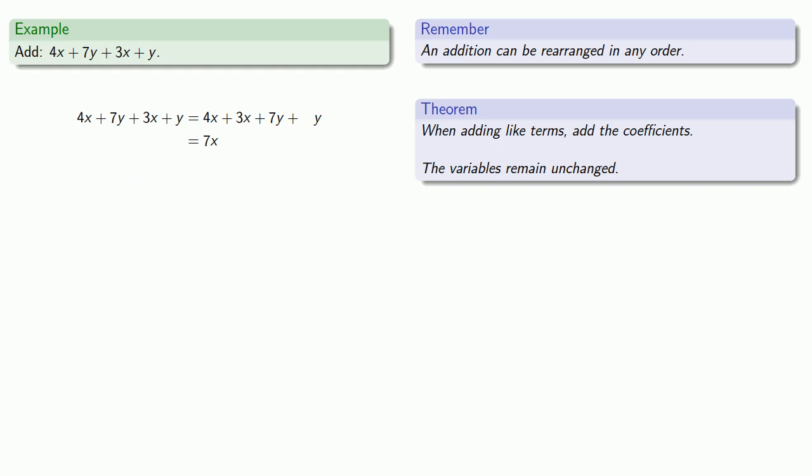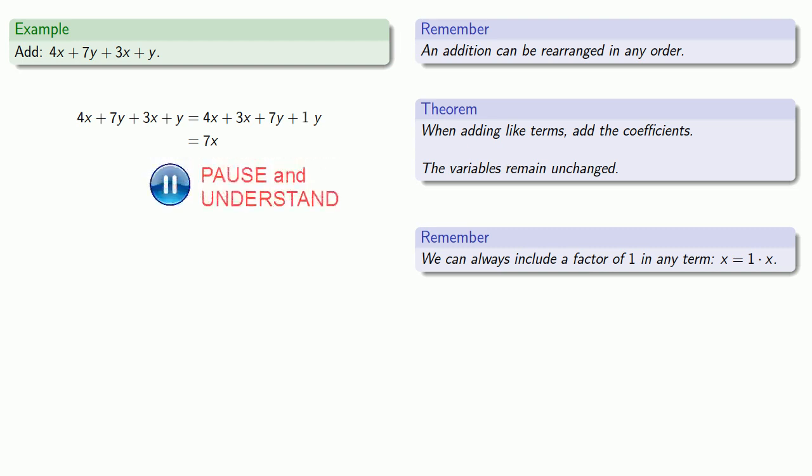7y and y are like terms, but there's a problem. y doesn't appear to have a coefficient. Well, actually it does. Remember, we can always include a factor of 1 in any term. So x is equal to 1 times x, and y is equal to 1 times y. Now my y terms have coefficients 7 and 1, and I'll add them together to get my coefficient of the sum, 8. So my sum is going to be 7x plus 8y.